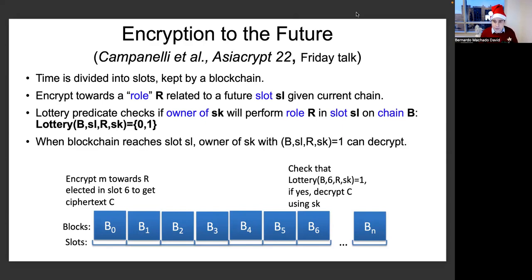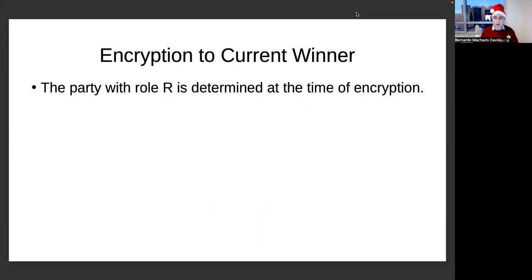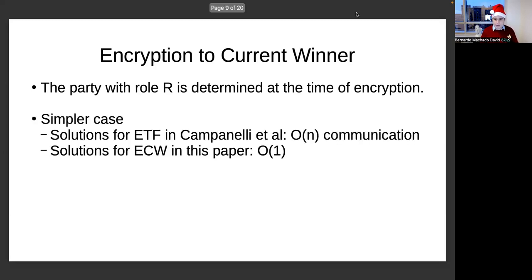While the work by Campanelli and others at Asiacrypt this year produces the first definition for this primitive and introduces a number of ways of constructing it, it still suffers from some drawbacks in terms of concrete efficiency and compatibility with existing publicly verifiable secret sharing schemes. In this paper, we construct what we call Encryption to the Current Winner (ECW), which allows you to encrypt a message towards a party who executes a role according to the lottery predicate given the current state of the blockchain. There is already enough randomness in the blockchain to determine the identity of the current winner of this role, although that identity remains hidden until that party acts. We do this using an idea based on shuffling.